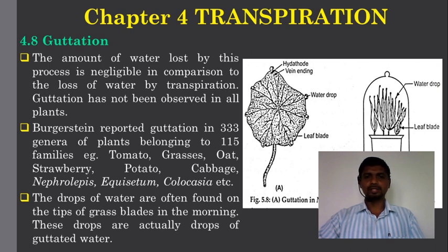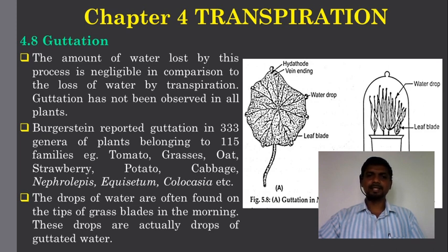The term guttation was proposed by Bergerstein. Bergerstein reported guttation in 333 genera of plants belonging to 115 families. For example, in tomato, grasses, oat, strawberry, potato, cabbage, nephrolepis, equisetum, and colocasia. In these plants, Bergerstein reported this phenomenon that we call guttation. The amount of water loss by guttation is negligible in comparison to the loss of water by transpiration.